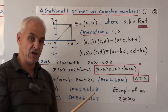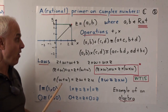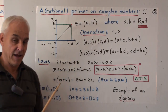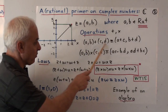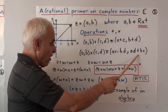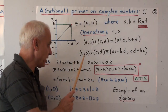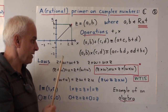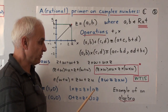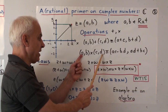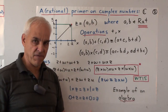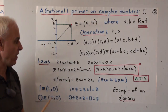Complex numbers support all four operations of addition, multiplication, subtraction, and division. Addition is point-wise, corresponding to the usual vector sum. The multiplication is where all the interest lies. The formula is: (a,b) times (c,d) is, by definition, (ac − bd, ad + bc). That's just how we define multiplication of these ordered pairs of rational numbers — and it turns out to be a very good choice because it has lovely properties.